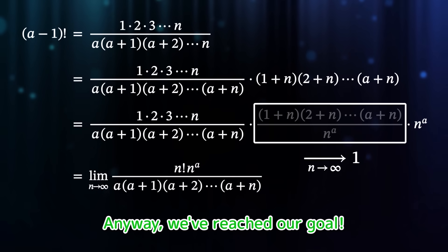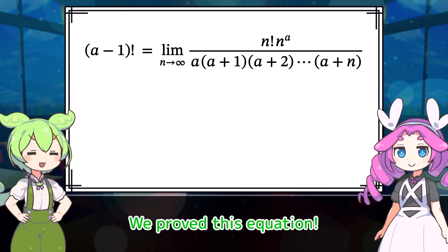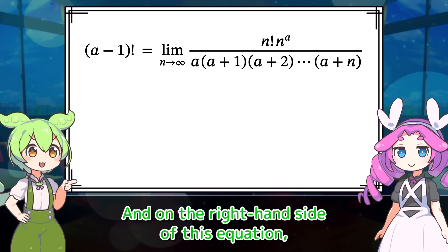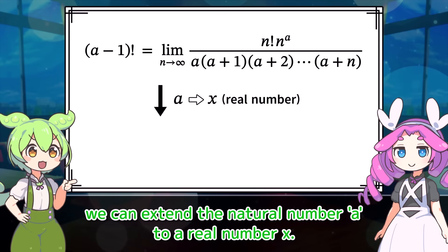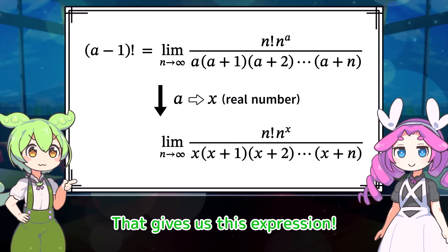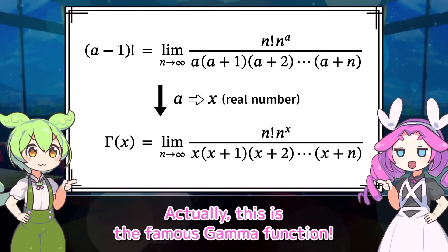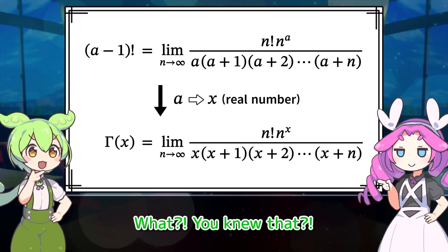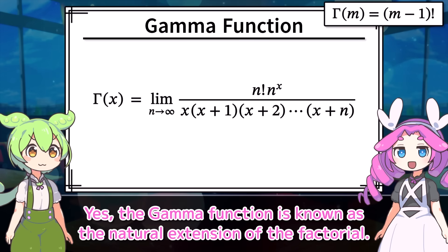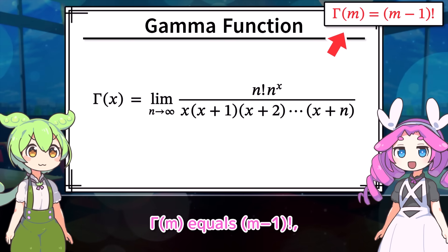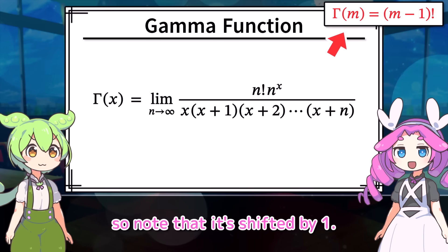We've reached our goal. We proved this equation: (a-1) factorial can be expressed through a mysterious limit. On the right-hand side of this equation, we can extend the natural number a to a real number x, giving us this expression. It's been quite a journey. Actually, this is the famous gamma function. The gamma function is known as the natural extension of the factorial. If m is a natural number, Γ(m) equals (m-1) factorial — so note that it's shifted by 1.